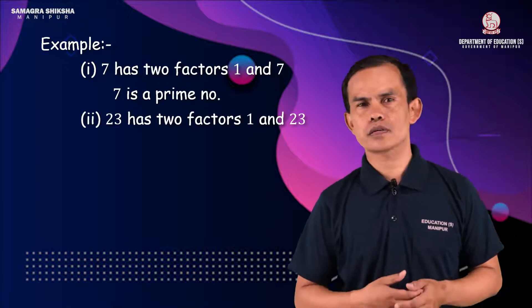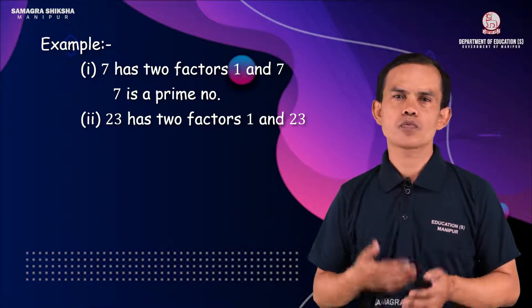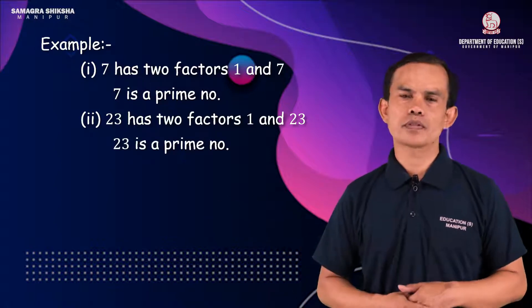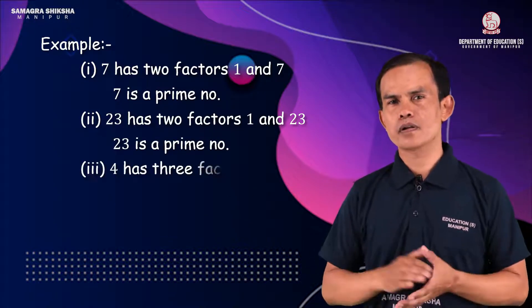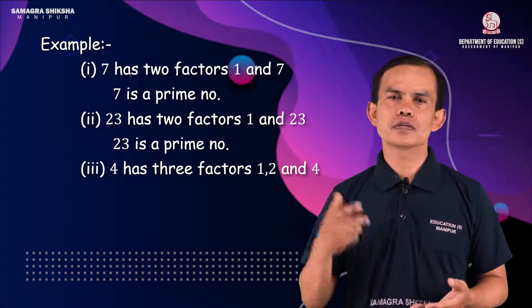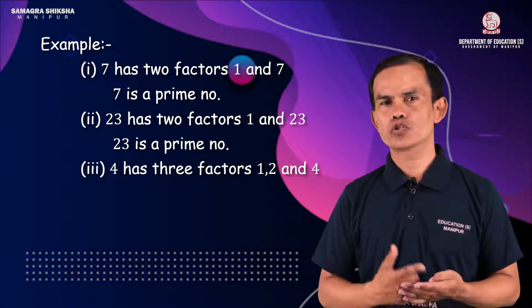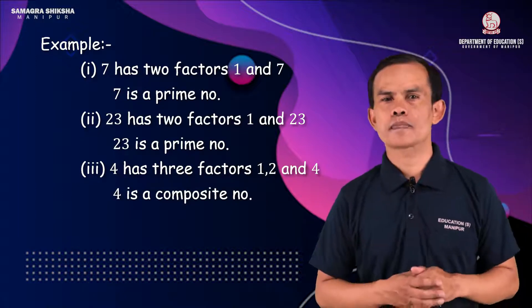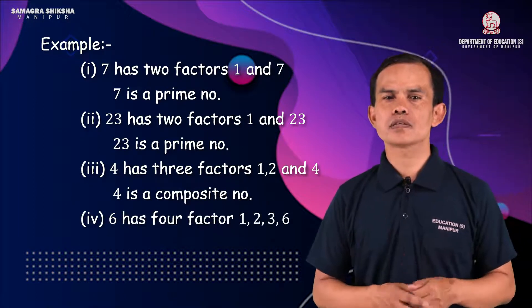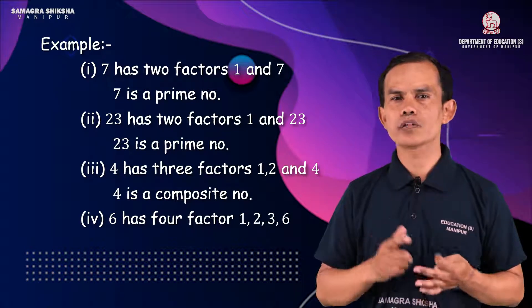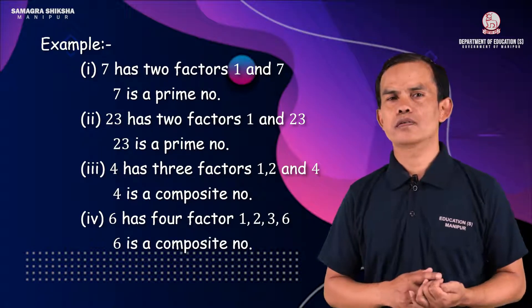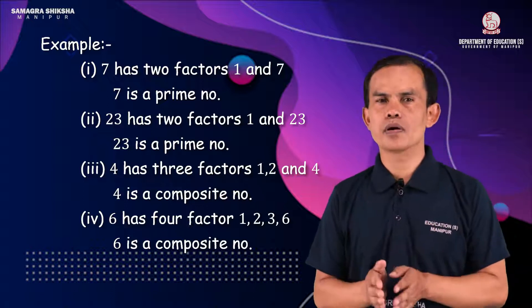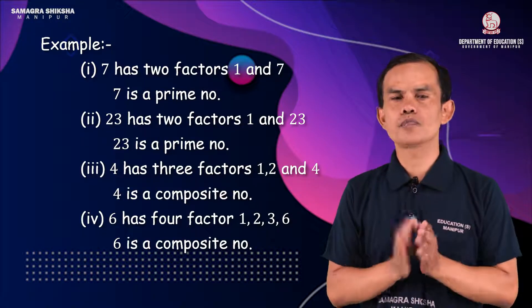For example, if you have 3, the factors are 1 and 3 — so it is a prime number. If you have 4, the factors are 1, 2, and 4 — it is not a prime. If you have 6, the factors are 1, 2, 3, and 6 — it is a composite number. If you have 5, it is a prime.